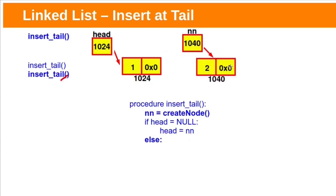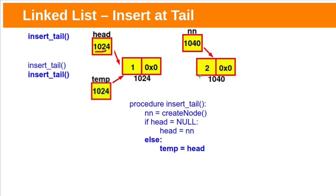A new node will be created and its address is stored within the new node pointer. Here head is not null, so we add this newly created node at the end of the list. We need to find the last node within our linked list. The last node's next field or link field will be null, because it will not be pointing to any other node.